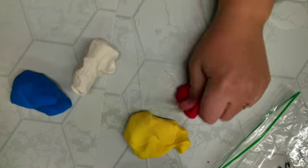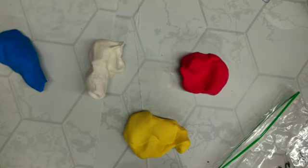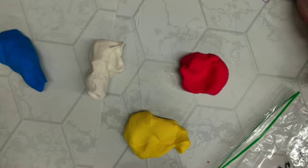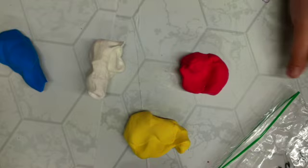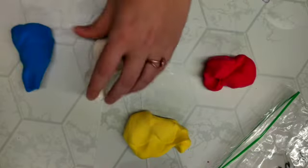All right, I am ready to start creating. So the first thing I want us to try out today is to try to mix our clay to create certain colors. As you can tell, we have the three primary colors: red, yellow, and blue, as well as white to kind of lighten things up.